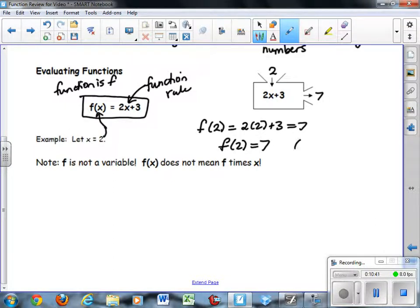That means that the point 2, 7 would be on the graph if we were to graph this function. Notice that f is not a variable and f of x does not mean f times x. So this is a quick review of some basic function characteristics. We'll be adding to this more by talking about other function characteristics later, but this should get you started.